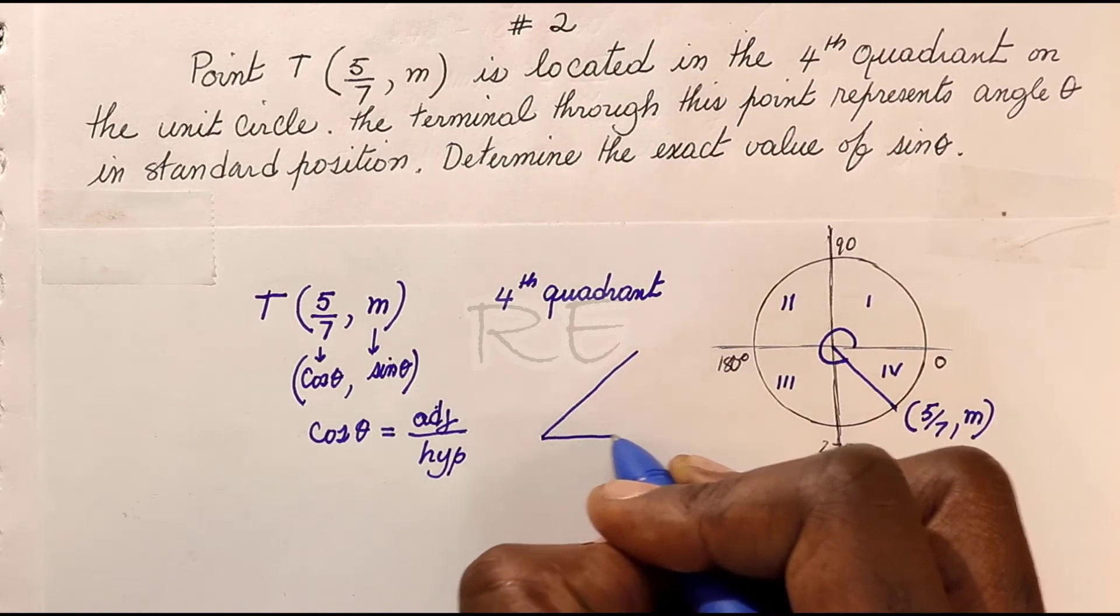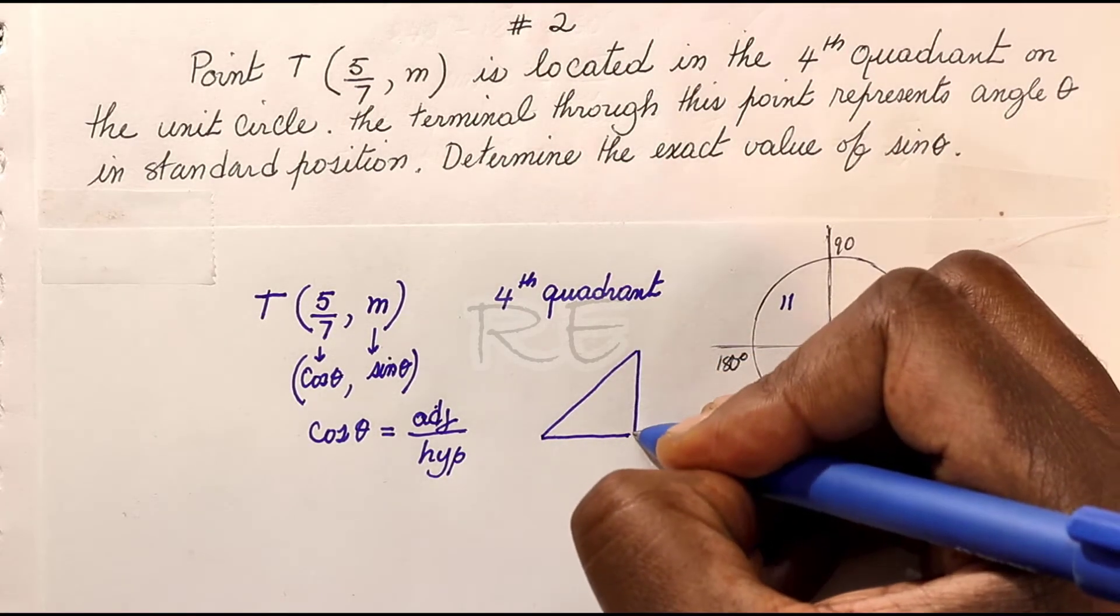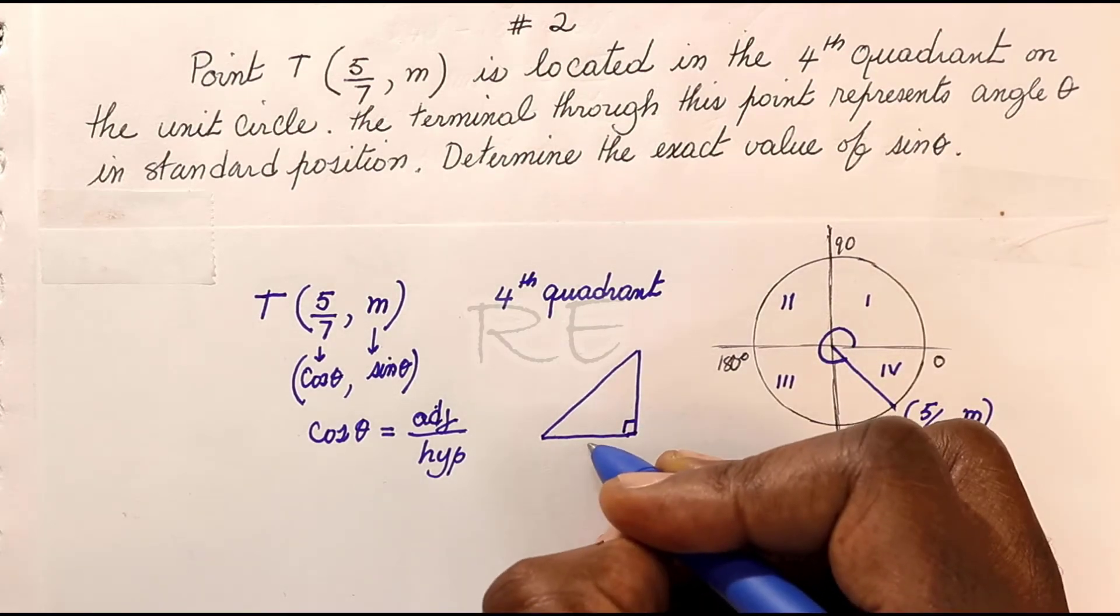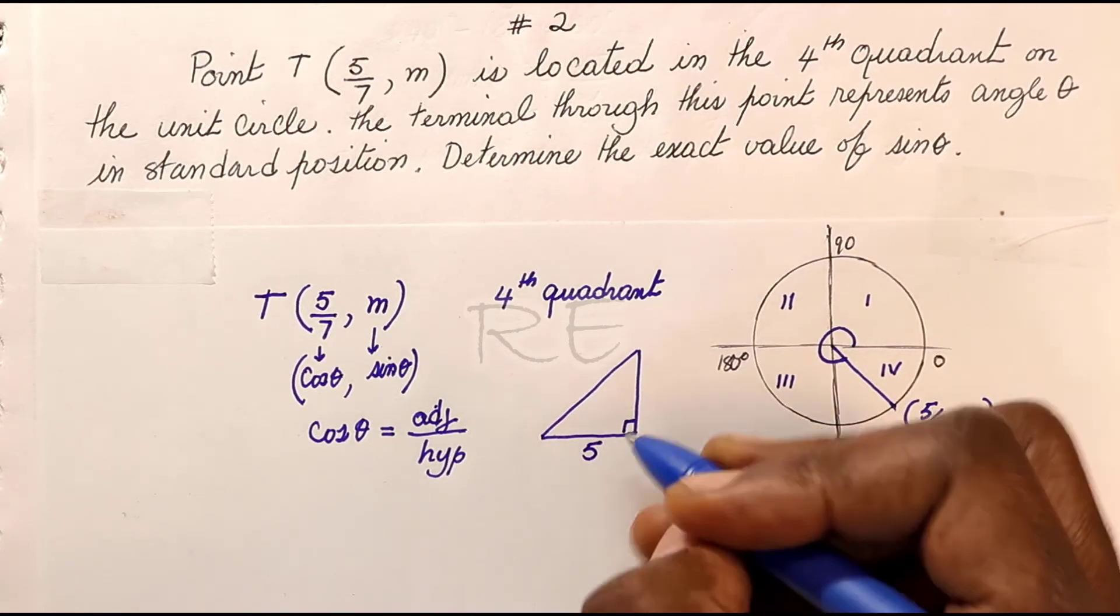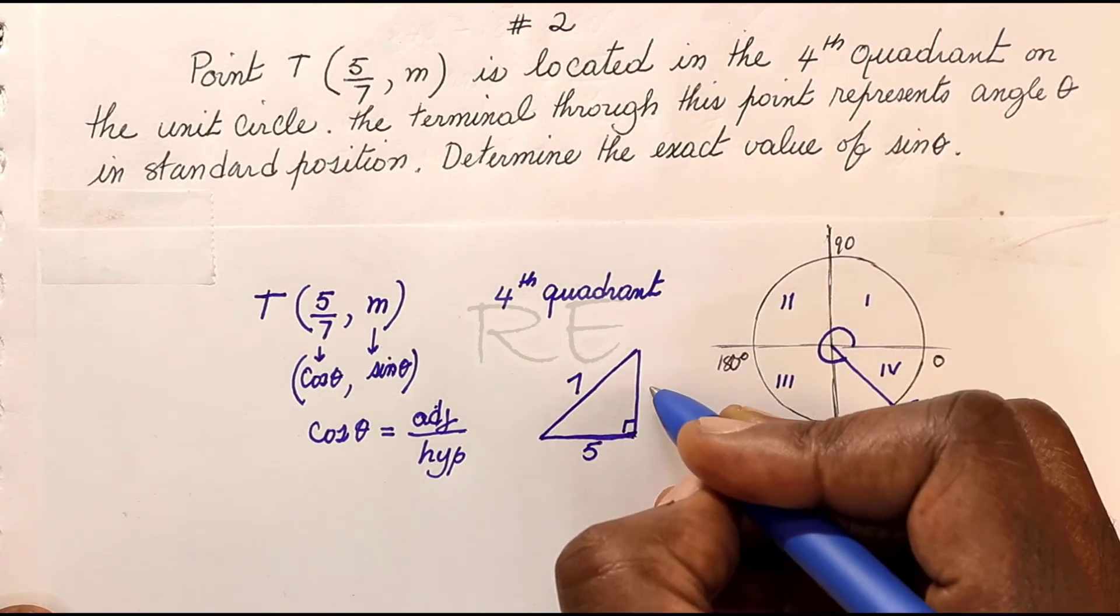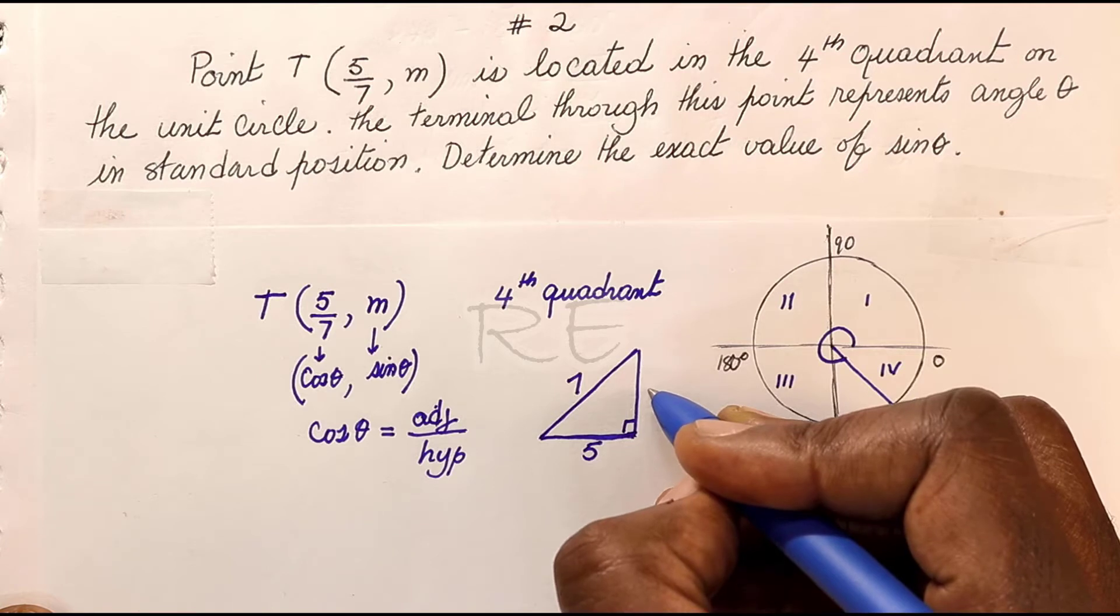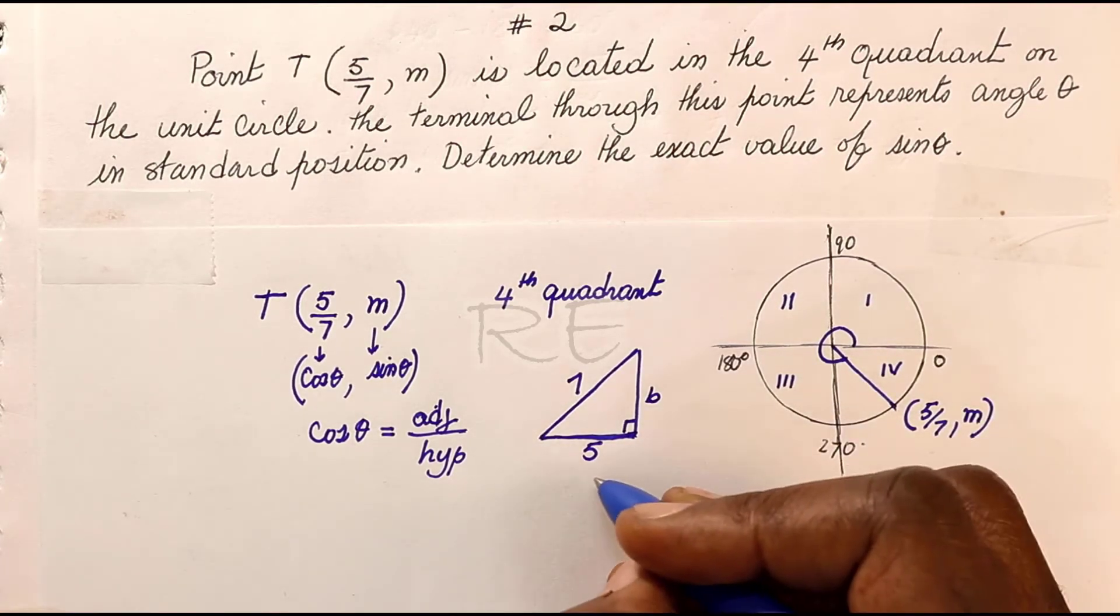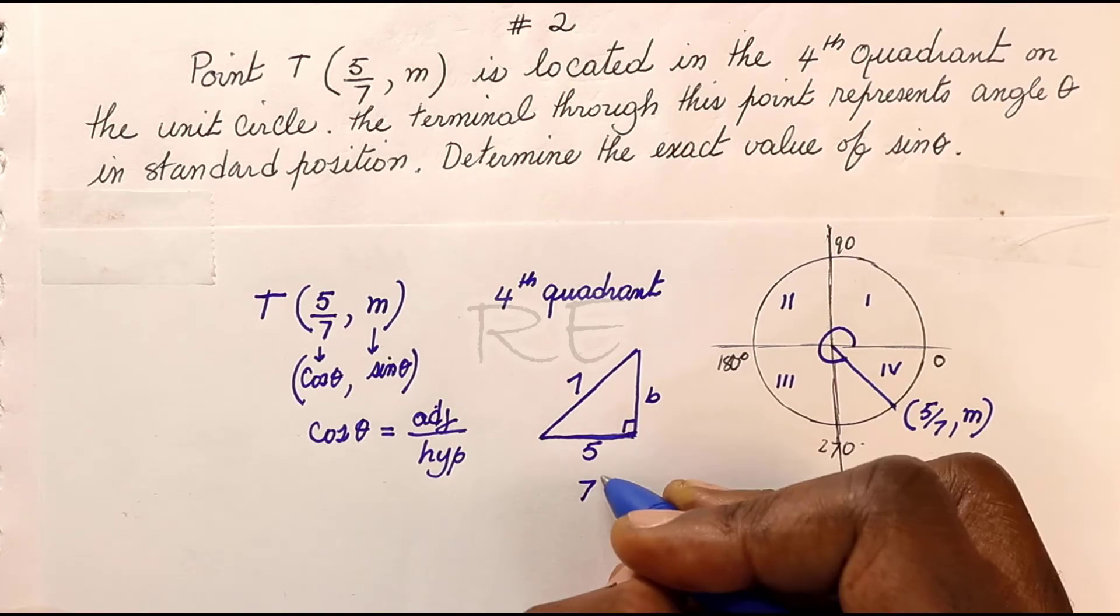We can sketch our reference triangle. If we choose this side to be the adjacent side, therefore B will be the opposite side and 7 is the hypotenuse, the longest side.